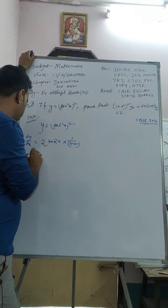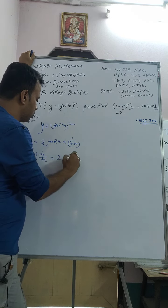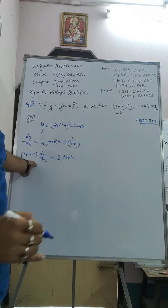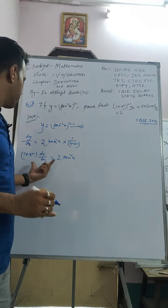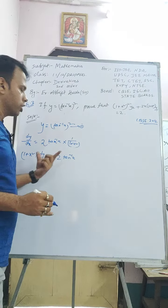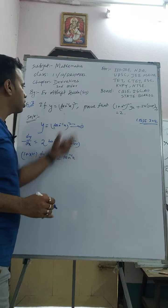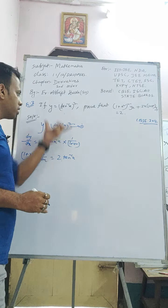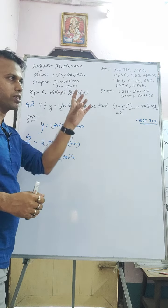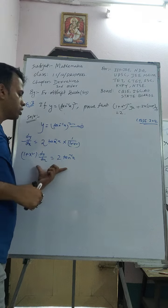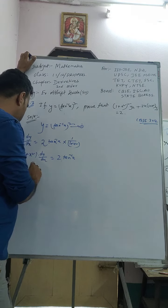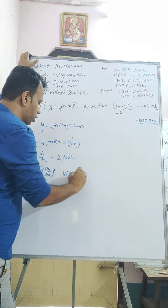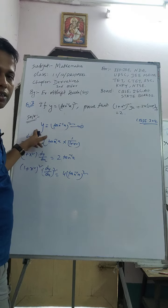Cross multiplying: (1 + x²)·dy/dx = 2·tan⁻¹(x). Now here is the vital step — square both sides. The left becomes (1 + x²)²·(dy/dx)². On the right: 4·(tan⁻¹x)², and since y = (tan⁻¹x)², we can replace (tan⁻¹x)² with y from equation 1. So (1 + x²)²·(dy/dx)² = 4y.